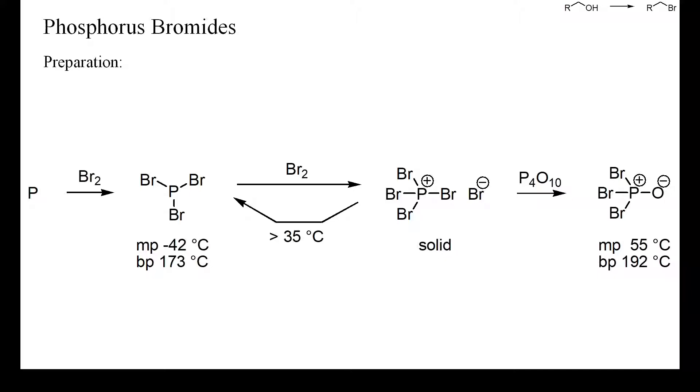Phosphorus tri- and pentabromide can be prepared directly from the elements under mild conditions. And in numerous deoxybromination procedures, these reagents are generated in the presence of the starting alcohol. These reagents, as well as phosphorus oxybromide, are also commercially available. But phosphorus pentabromide is not very stable and tends to decompose into bromine and phosphorus tribromide upon heating above room temperature.